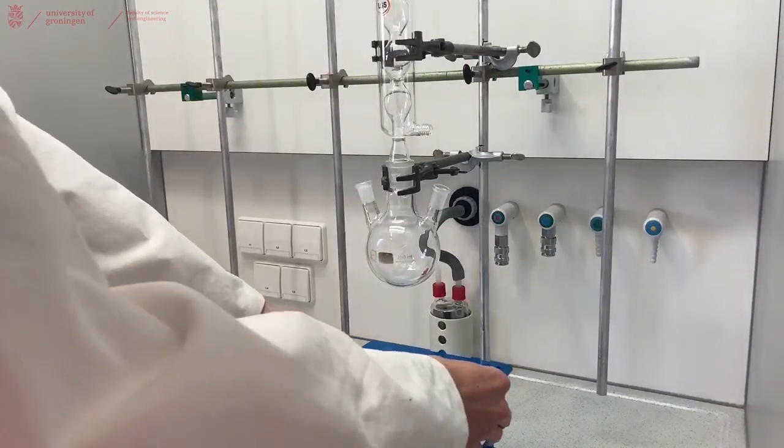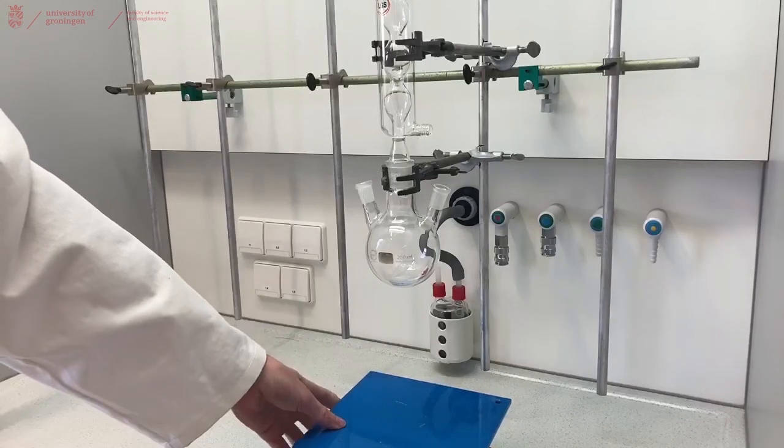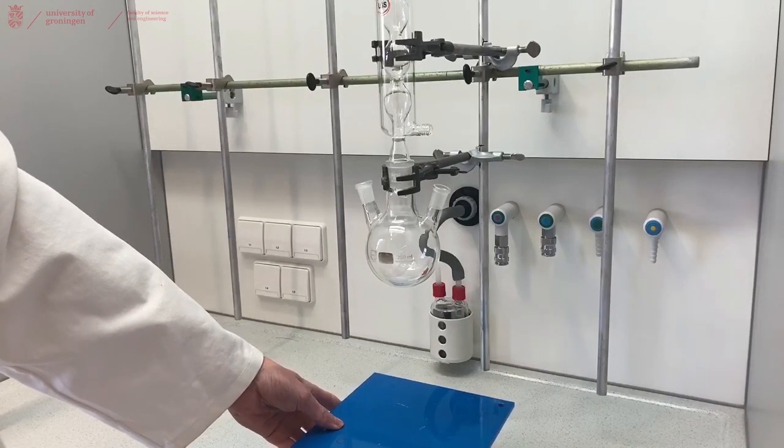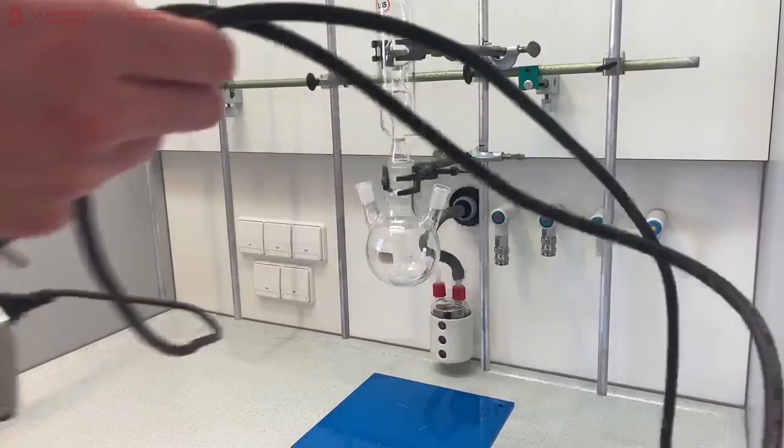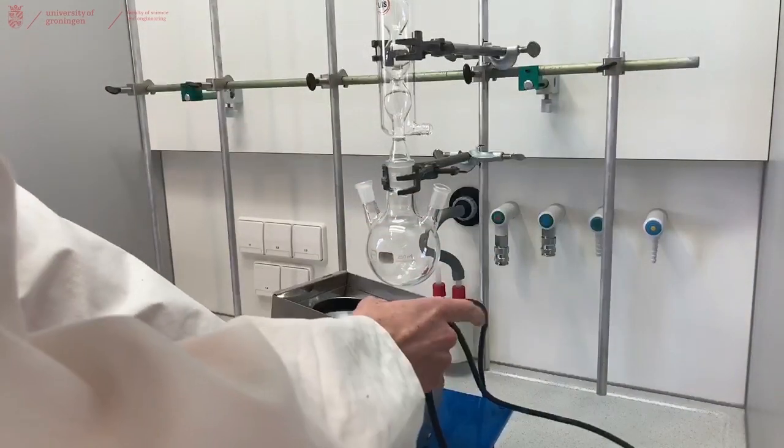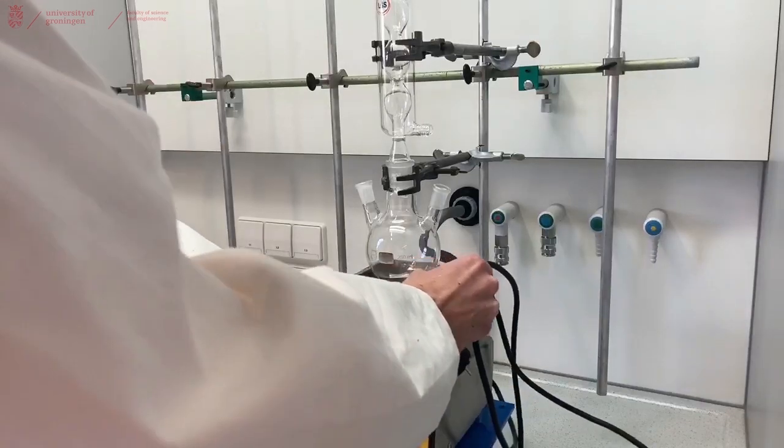Place your heater and lab jack underneath your three neck flask and be careful not to smash your flask.